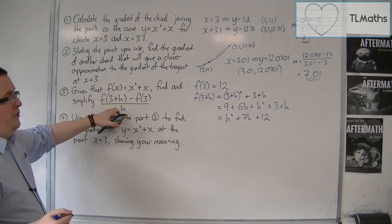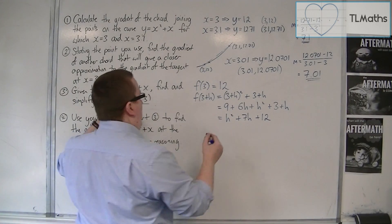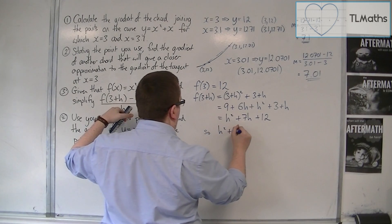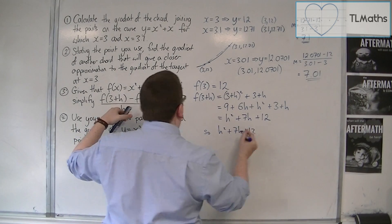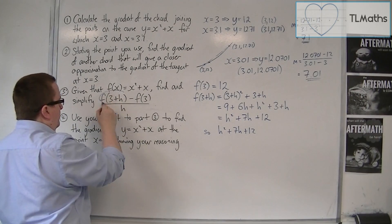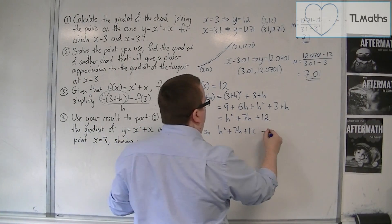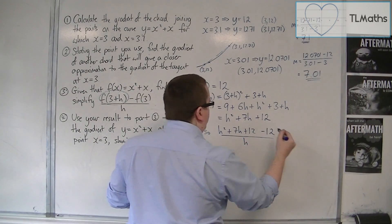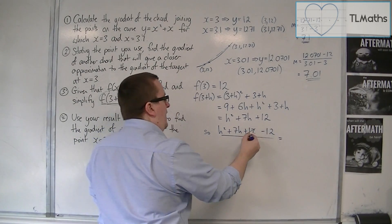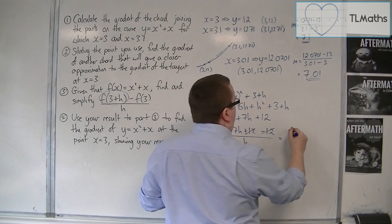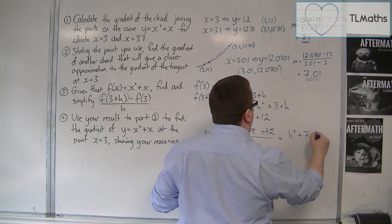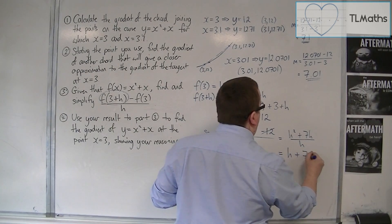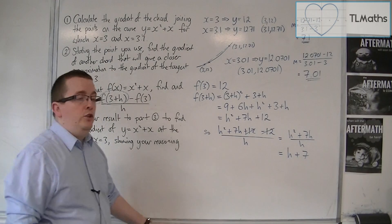So now we want to substitute into this. So we've got f of 3 plus h: h squared plus 7h plus 12. That's that bit there. Take away f of 3, which is that 12, divide by h. So that 12 and that 12 cancel. I'm left with h squared plus 7h over h. And then we have h plus 7 left over when I divide through by that h.